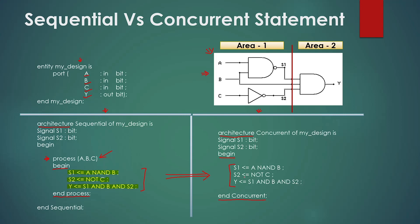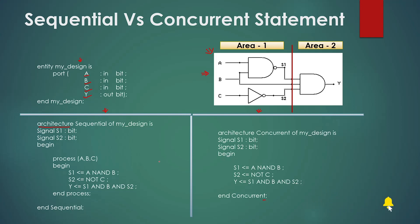Now ask yourself: if you simulate these two VHDL codes in the simulator, will both give you the correct results? If your answer is yes, then you are correct. Despite executing differently — one sequentially and another concurrently — both will give you the same results, because we have written the sequence of flow from input to output in the correct order in both architectures.